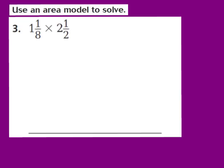Now let's take a look at question number 3. The directions say to use an area model to solve. For question 3, they give us the mixed number 1 and 1/8 times the mixed number 2 and 1/2. There are certain steps we're going to follow to help us solve this problem. Step number 1 is to rewrite each mixed number as the sum of a whole number and a fraction.